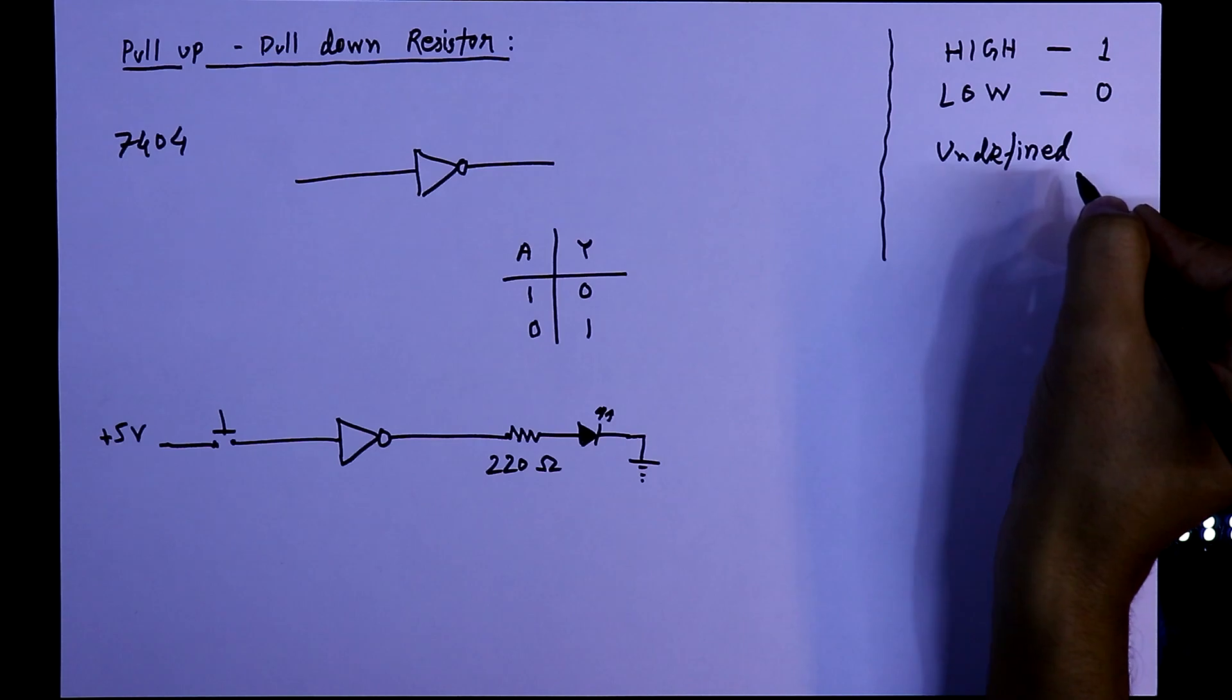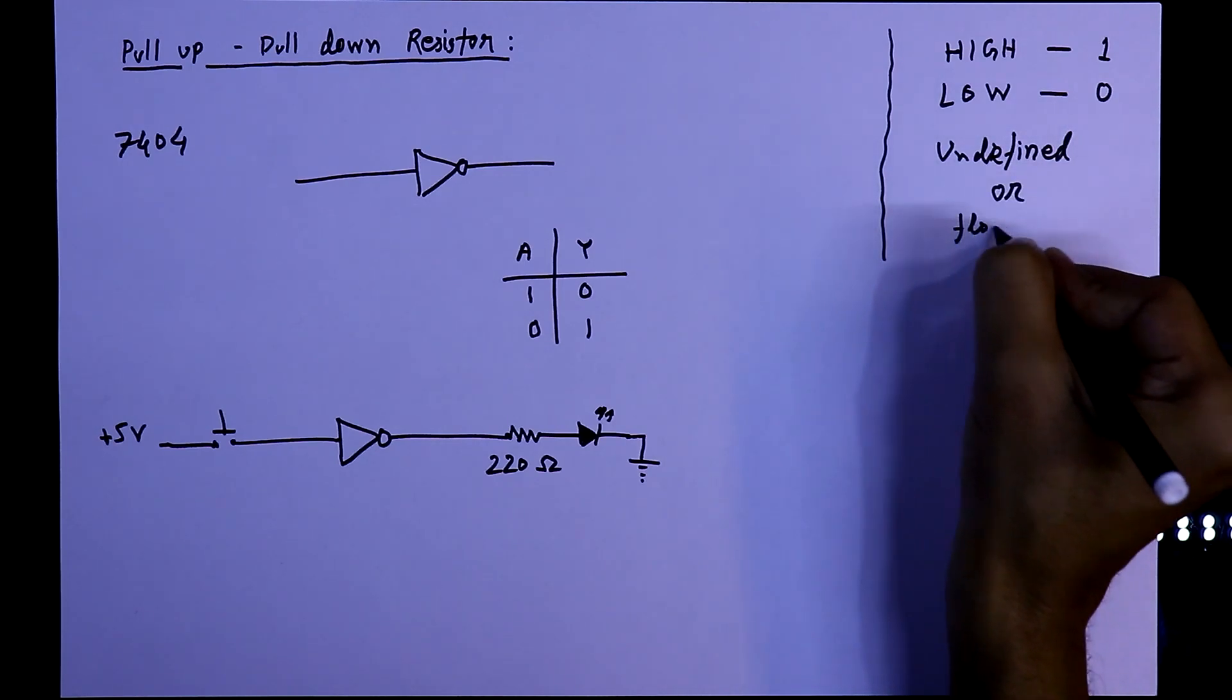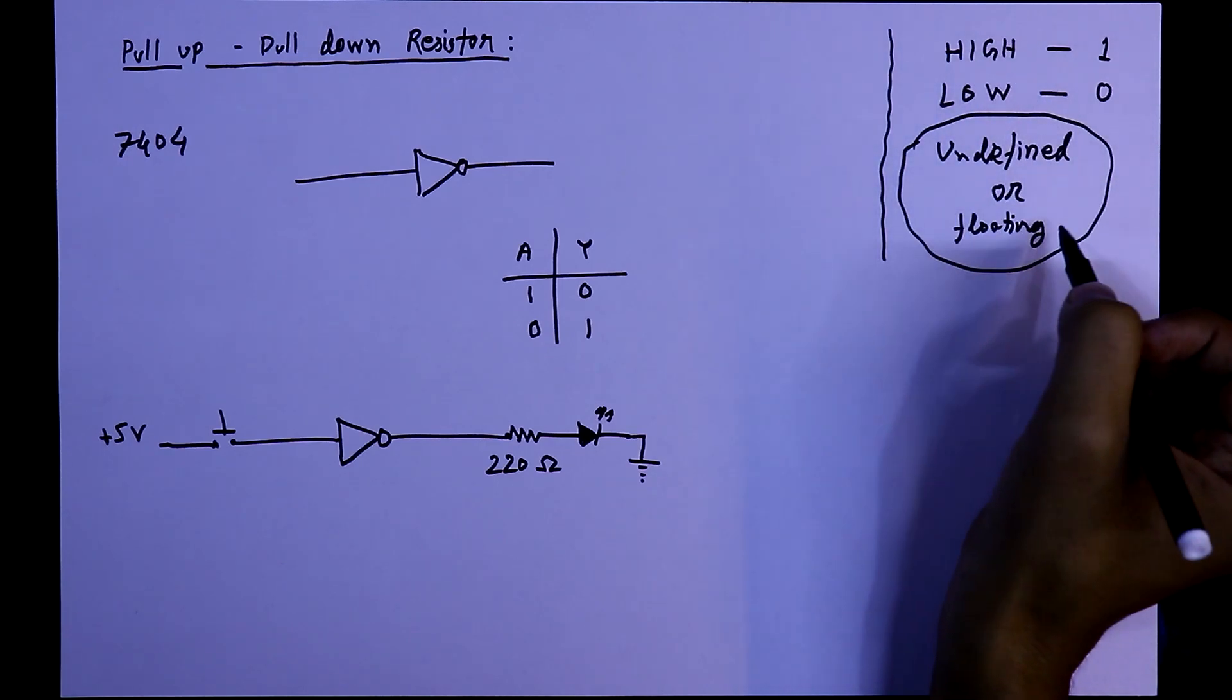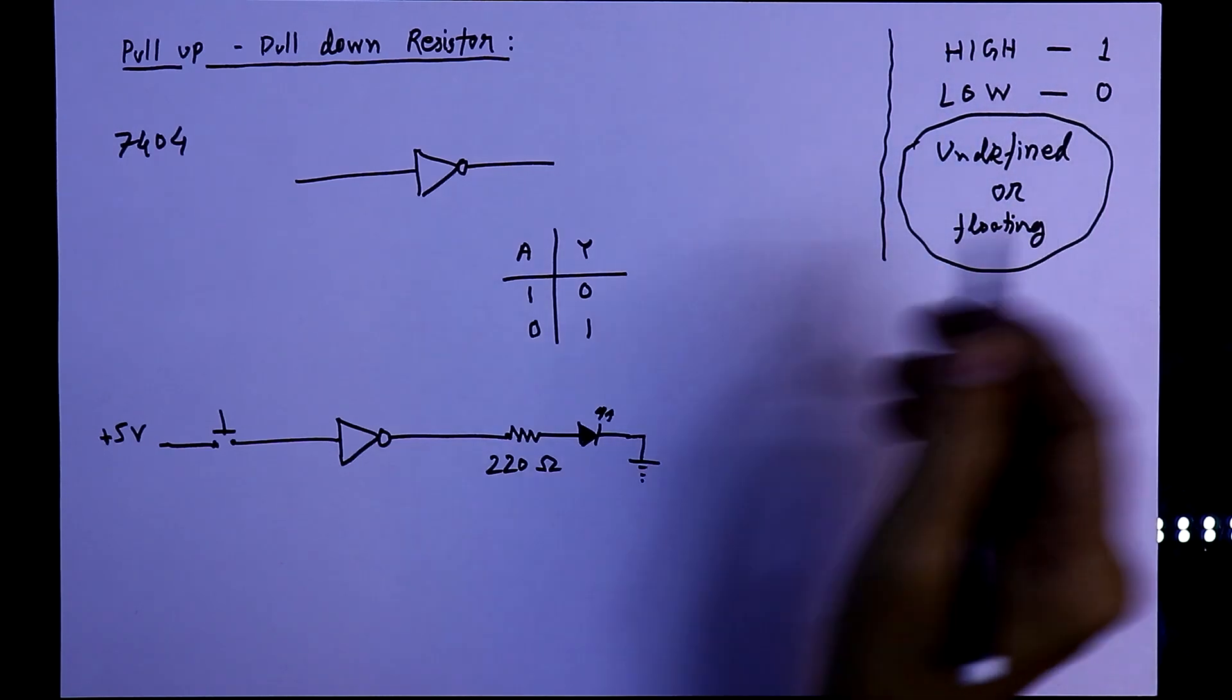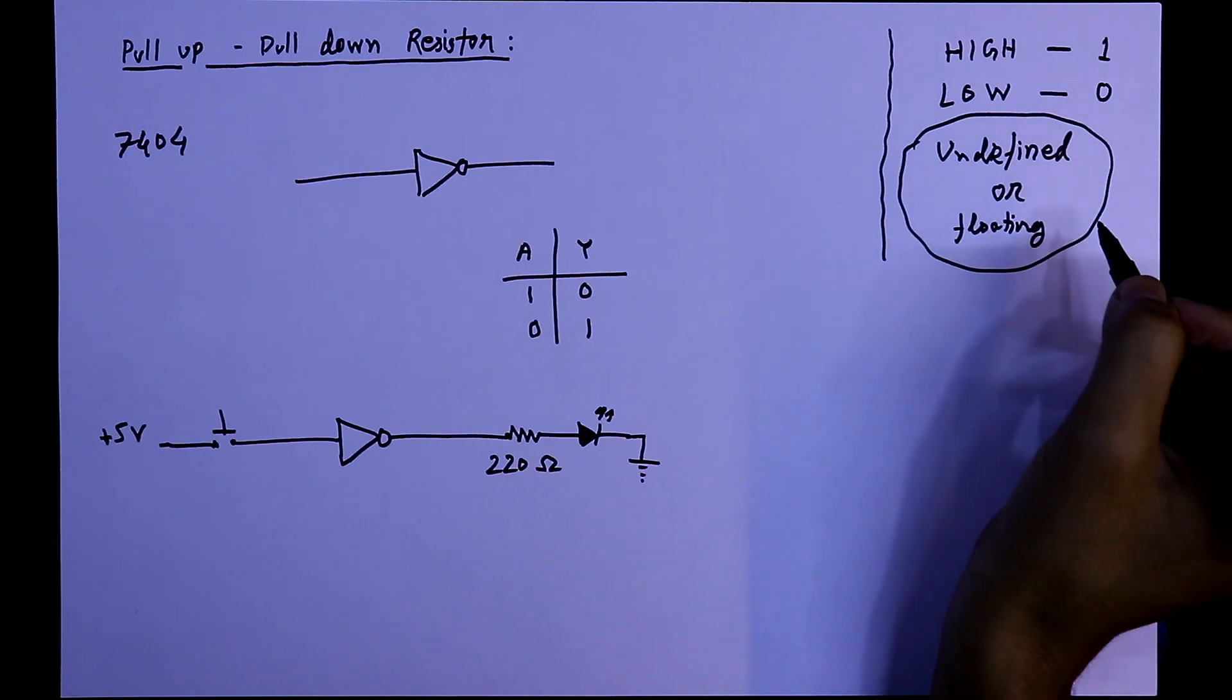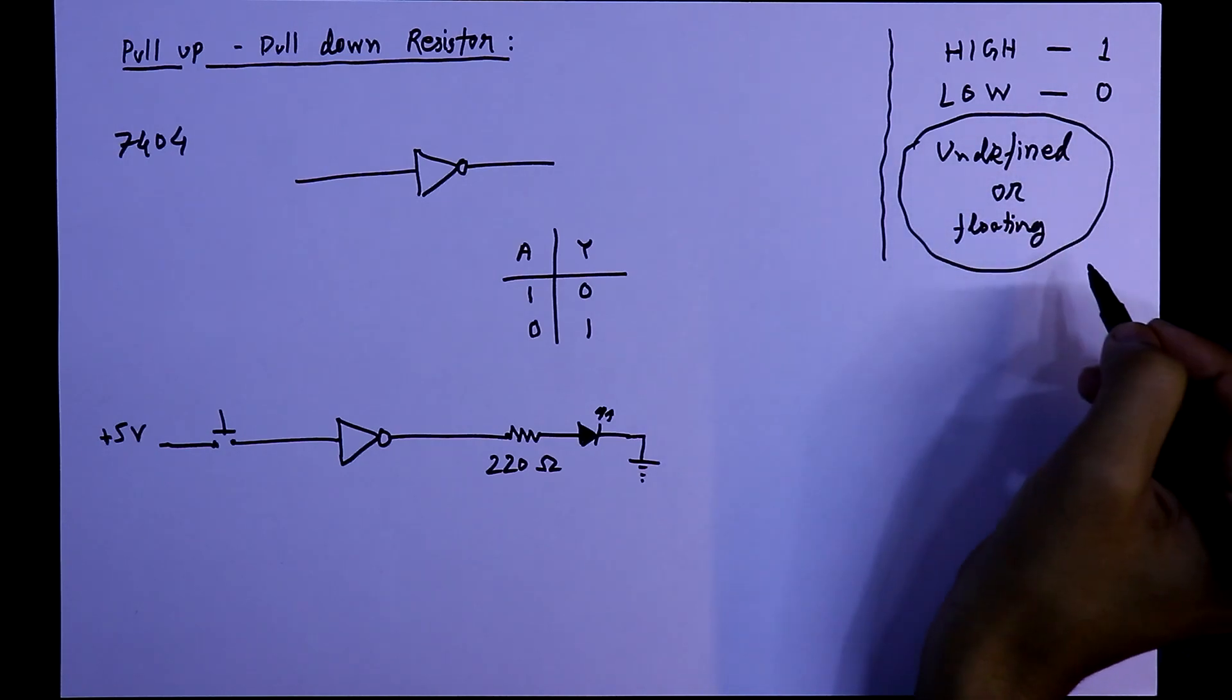And the third state is undefined, or we can say floating state. We can easily detect whether it is high or low, but when this logic IC gets this state, we cannot say whether it is high or low. So this state is known as undefined or floating state.